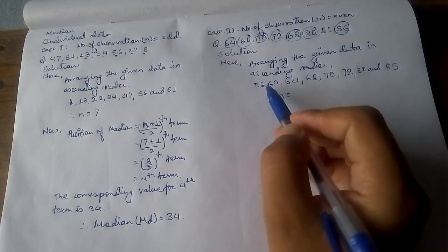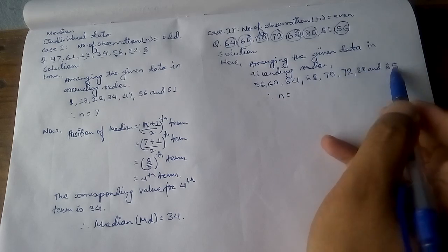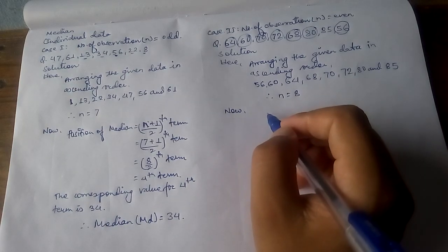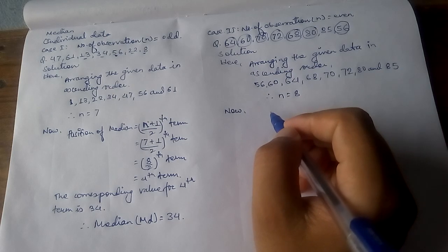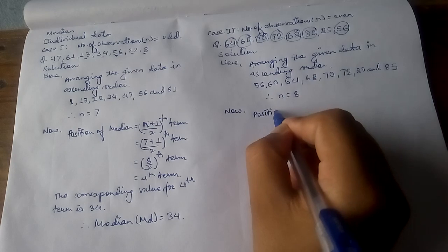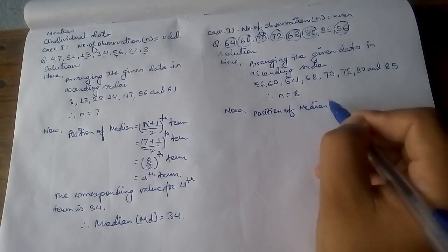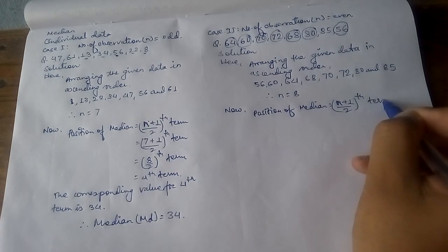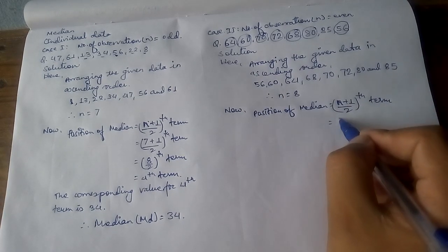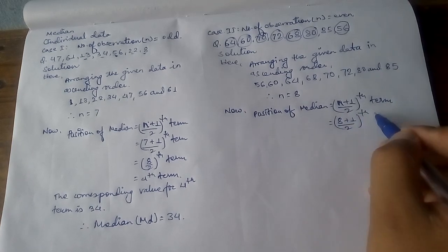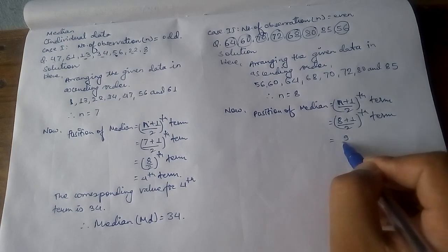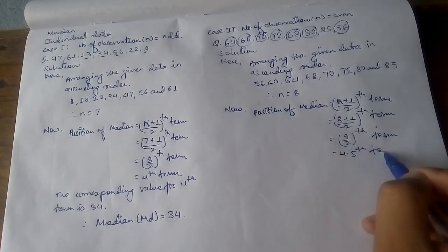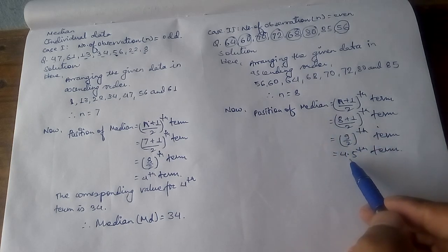Therefore n equals 8, counting the terms: 1, 2, 3, 4, 5, 6, 7, 8. Now we need to find the position of the median. Since the median is a partition value dividing the data into two equal parts, the position of the median = (n + 1) / 2 = (8 + 1) / 2 = 9 / 2 = 4.5th term. The position comes out as a decimal number.